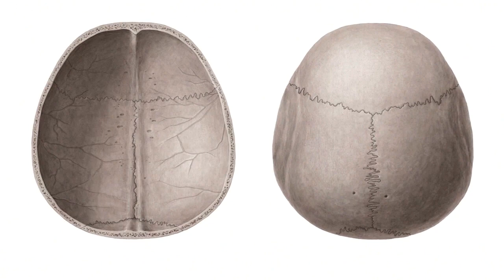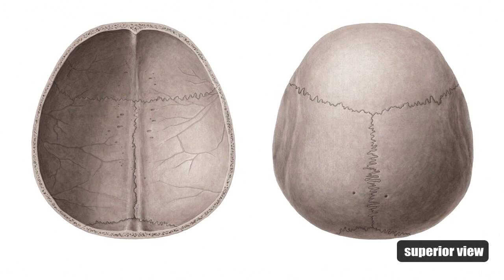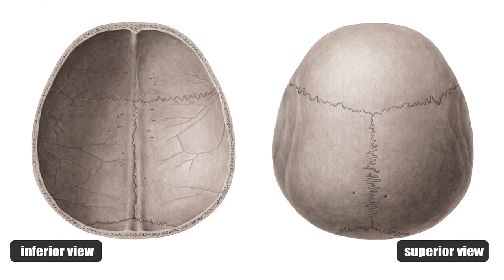We're going to look at the different structures that we can find on the calvaria. On the right side we're looking at the superior view of the calvaria, while on the left side you can see the inferior view if you were looking from below. Notice that on the superior part of the calvaria, this structure is generally smooth with a few structures interrupting the smooth landscape such as sutures and foramina, which we will talk about later on.